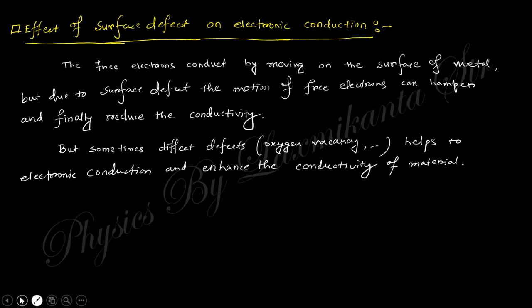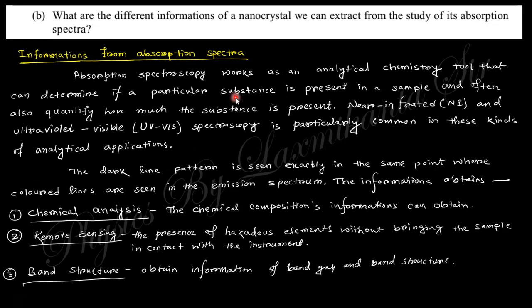Next is: what are the different information of a nanocrystal we can extract from the study of its absorption spectrum? That means when you get the absorption spectra during the optical measurement of the sample on nanofilm, what information do you gather from this absorption spectra? There are various information. The most effective information is the chemical composition of the material. From the absorption spectra, you can easily determine the chemical composition.